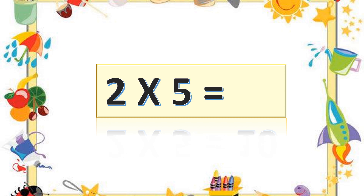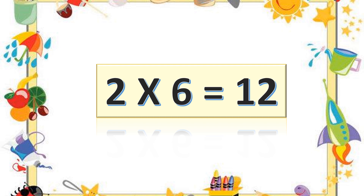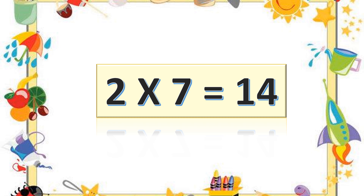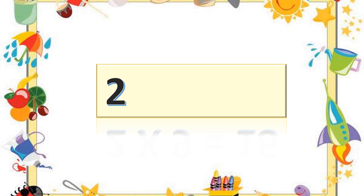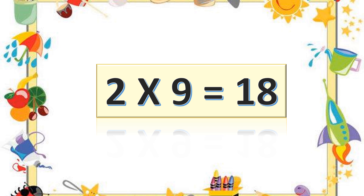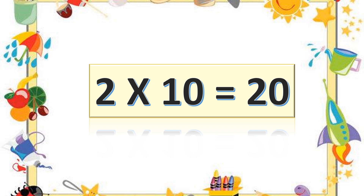Two fives are ten. Two sixes are twelve. Two sevens are fourteen. Two eights are sixteen. Two eights are sixteen. Two nines are eighteen. Two nines are eighteen. Two tens are twenty. Two tens are twenty.